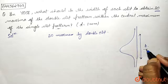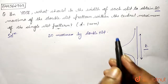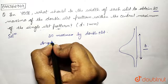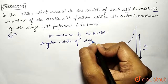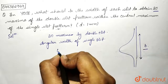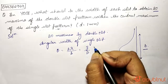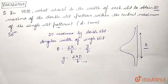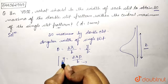So what should be the width of the maxima of the single slit pattern so that it can accommodate 20 maxima by double slit? The angular width of the single slit is theta equals 2λ/b, which equals y/D. So we can write y = 2λD/b, where b is the width of each slit and y is the distance from the center to the upper end. Let this be our first equation.